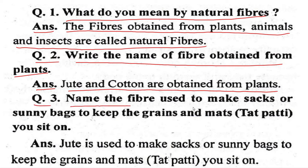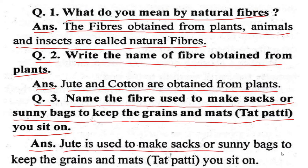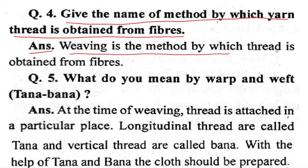Question 3: Name the fiber used to make sacks or gunny bags to keep grain, and mat. Answer: Jute is used to make sacks or gunny bags to keep grain, and mats. Question 4: Give the name of the method by which yarn or thread is obtained from fibers. Answer: Spinning is the method by which thread is obtained from fibers.